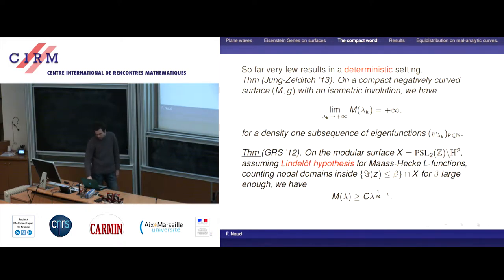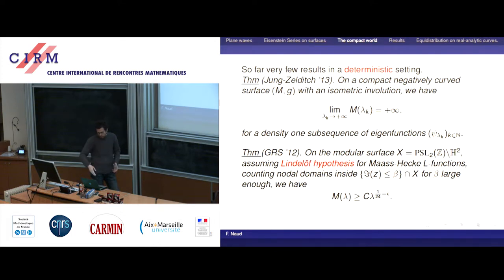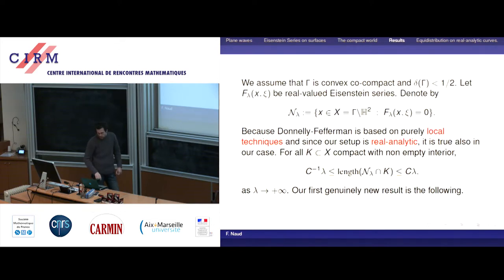This just tells you that the number of nodal domains goes to infinity but there is no effective lower bound. Before that result, there was a bold statement by number theorists — GRL stands for Ghosh, Reznikov, and Sarnak. On the modular surface, assuming the Lindelöf hypothesis for all Maass–Hecke eigenfunctions — a strong assumption — you do have an effective lower bound for the number of nodal domains. You look at things below a height beta in the cusp, taking beta large enough. There are some other related results by Jung.